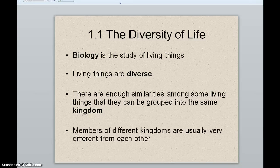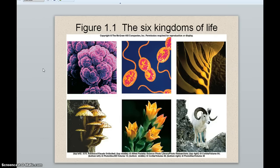People called systematists have been working for hundreds of years to classify living things into different groups based primarily on similar anatomical characteristics. But that's changing now because of new findings about DNA and our ability to look at the DNA of individuals. In the past, things were classified based on morphological characteristics visible to the naked eye or under a microscope, but now we're going beyond that.